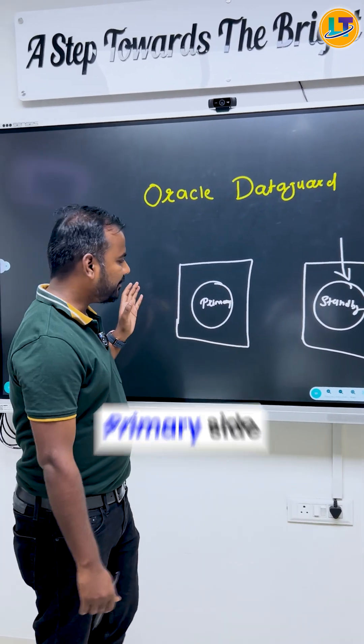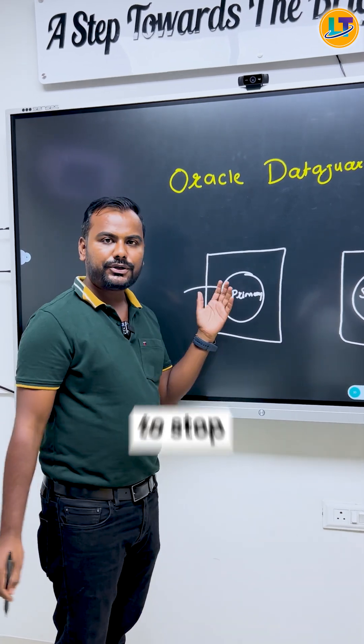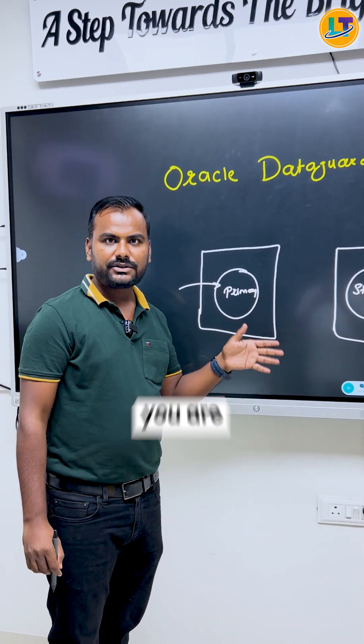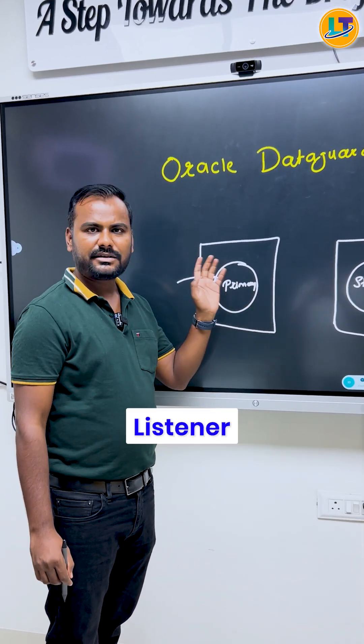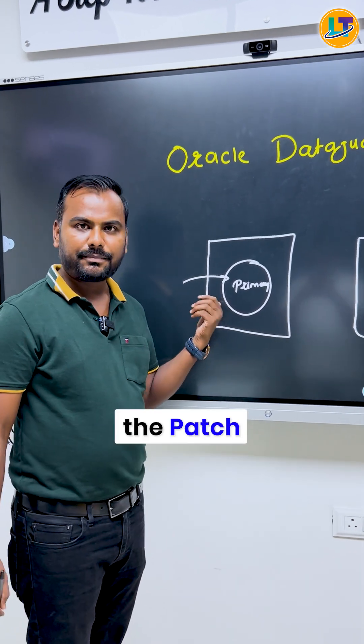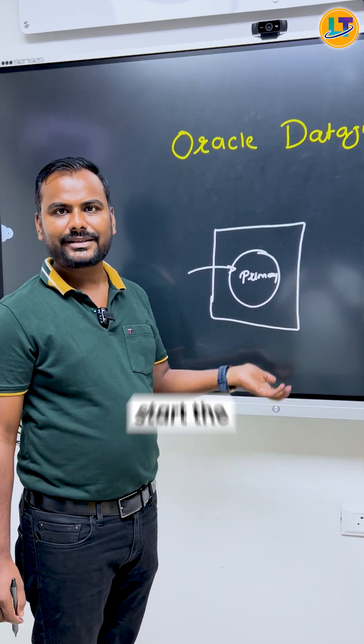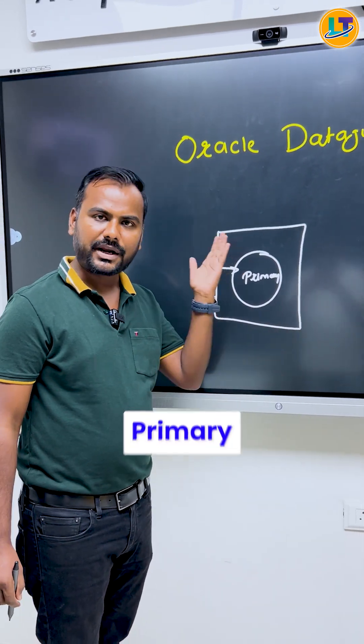Then you come to the primary site. Here on primary, again you are going to stop the services — your database and listener. You are going to apply the patch, and after the patch you can start the services of the primary.